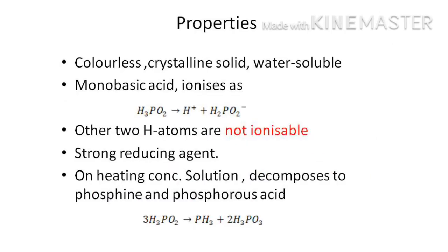The solution is then concentrated and hypophosphorus acid separates out in the form of crystals. The properties of hypophosphorus acid: it is a colorless crystalline solid, water soluble, and a monobasic acid — it can give only one H⁺. The other two hydrogen atoms are not ionizable. It is a strong reducing agent and can reduce mercury chloride to mercurous chloride and then to mercury. When concentrated solution is heated to 40°C or above, it decomposes giving phosphine and phosphorous acid.